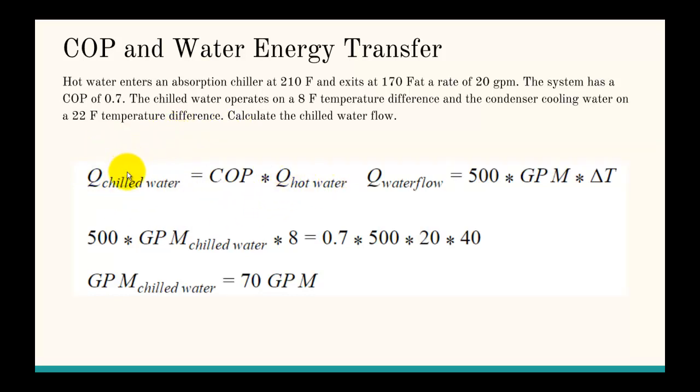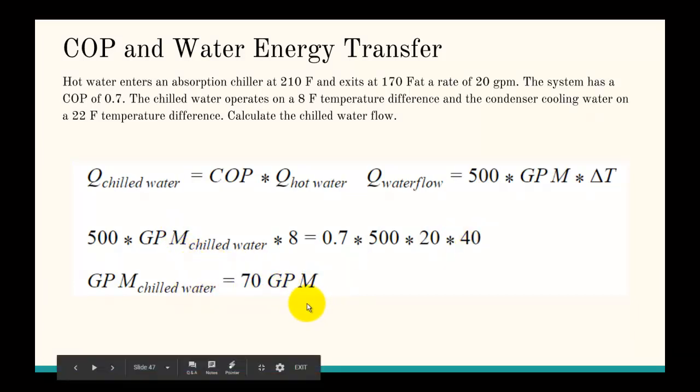What we do is take into account that any water flow has a heat flow of 500 times the GPM times the change in temperature. We set up this equation. On the left side, we get 500, and we don't know the GPM of the chilled water, so we keep that, and we multiply the 8 degree temperature difference of the chilled water. On this side, we take the COP, which is 0.7, then we take 500 times the GPM of the hot water, times the 40 degree temperature difference of the hot water. When we solve for the chilled water GPM, it's 70. And that's how we do that problem. Thanks for watching.